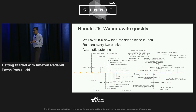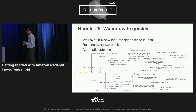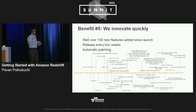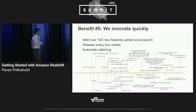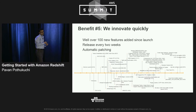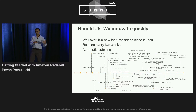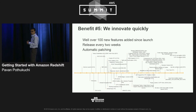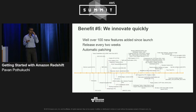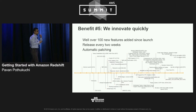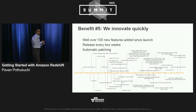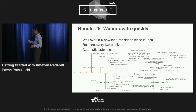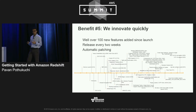Unlike on-premises software, we innovate quickly. Typically you pay a premium for maintenance updates on-premises and get patches or feature enhancements only once every six months to a year. With Redshift, we have a continuous deployment model and release improvements and features almost on a two-week cadence, all directly patched into your cluster without you having to worry about it.